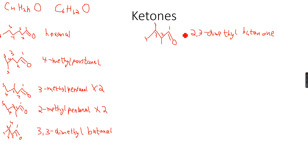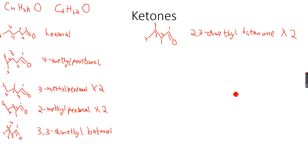Does 2,3-dimethylbutanal have any stereoisomers? It does not have any carbon-carbon double bond, so no geometric isomers. But the second carbon atom is a chiral center because it is attached to four different groups, so we multiply this by two because it exists as two optical isomers.